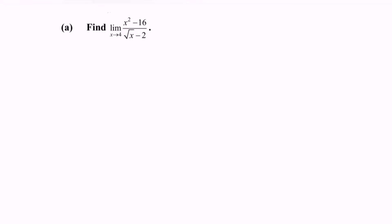Find the limit when x approaching 4 for the function (x² minus 16) over (square root of x minus 2). What we have to do is to substitute the value 4. So we have 4 squared minus 16, which gives 0, over square root of 4, which gives 2, minus 2, which gives 0. So this is what we call the indeterminate form.